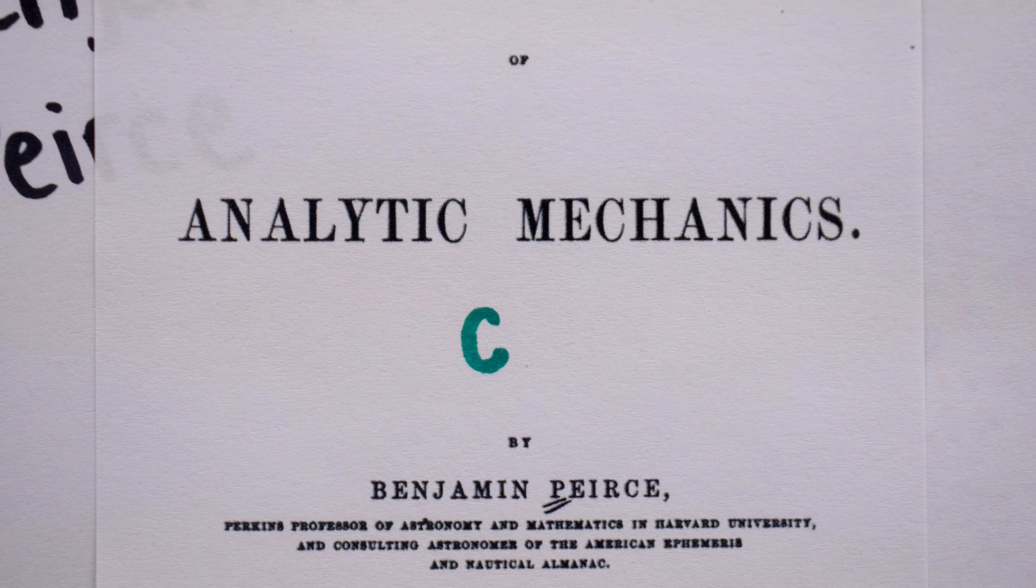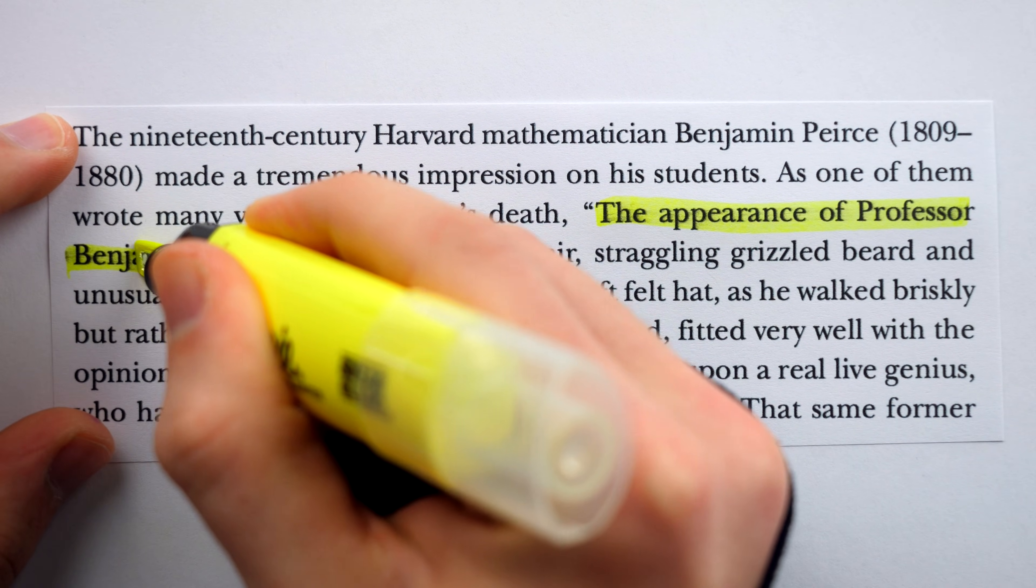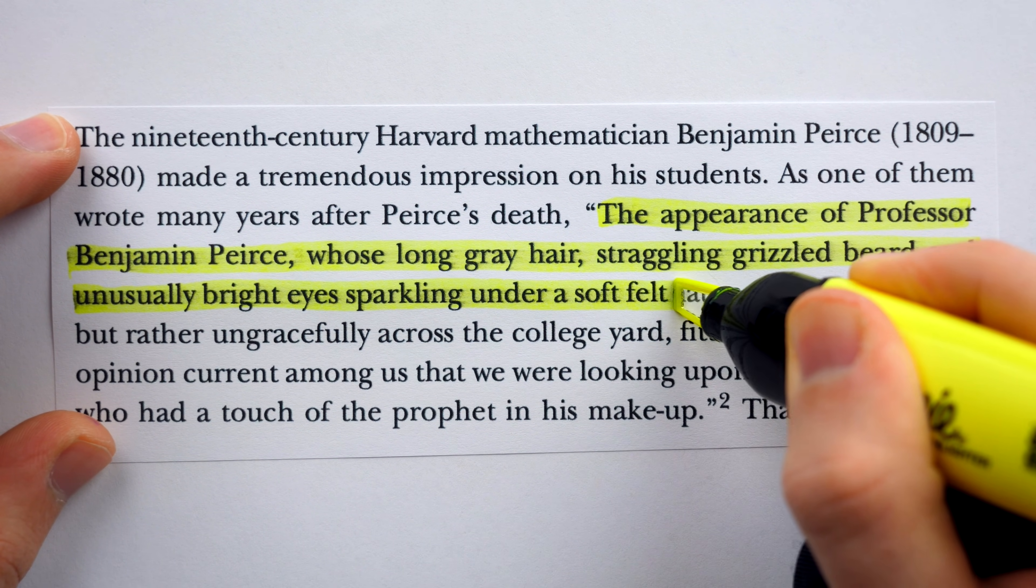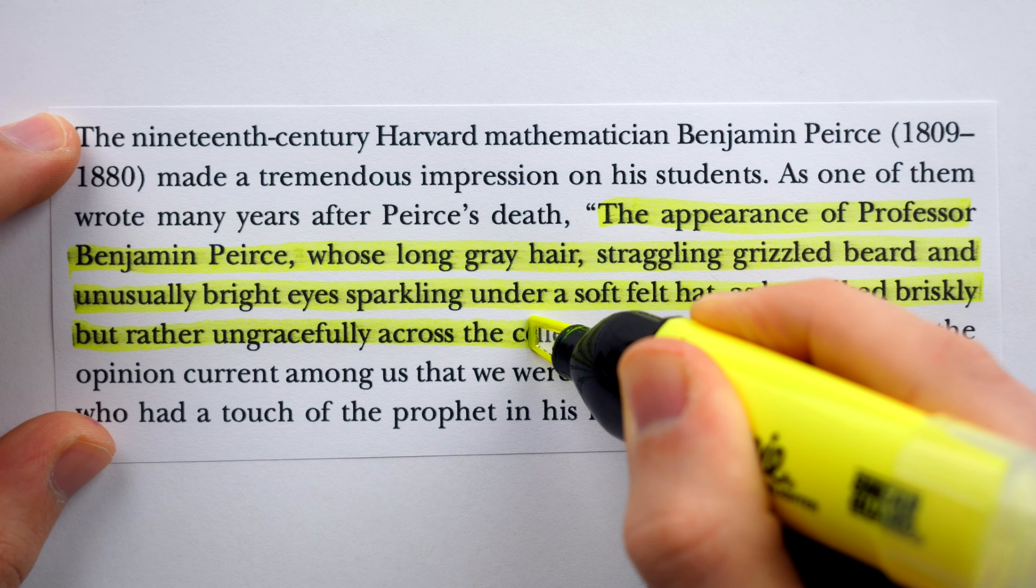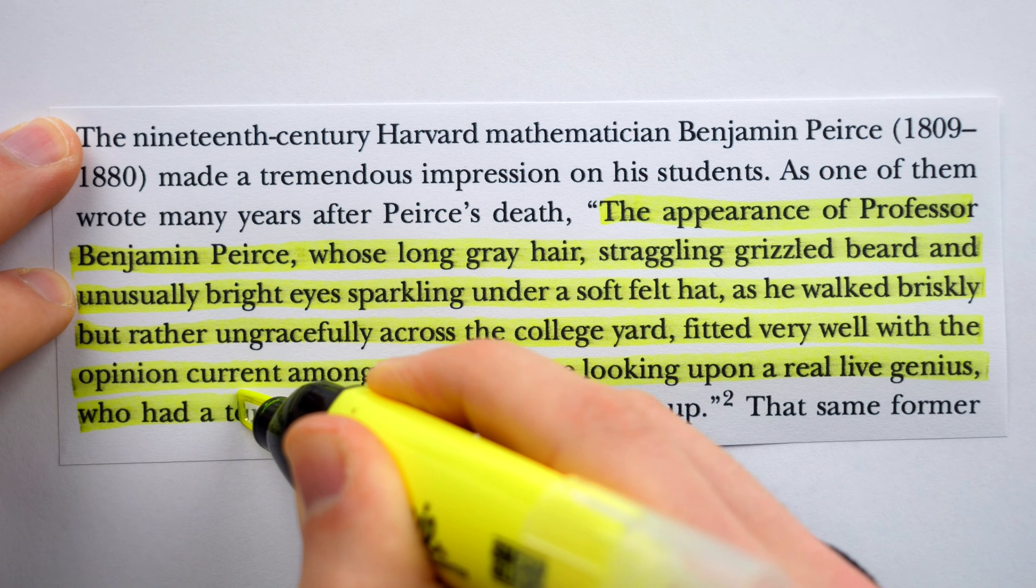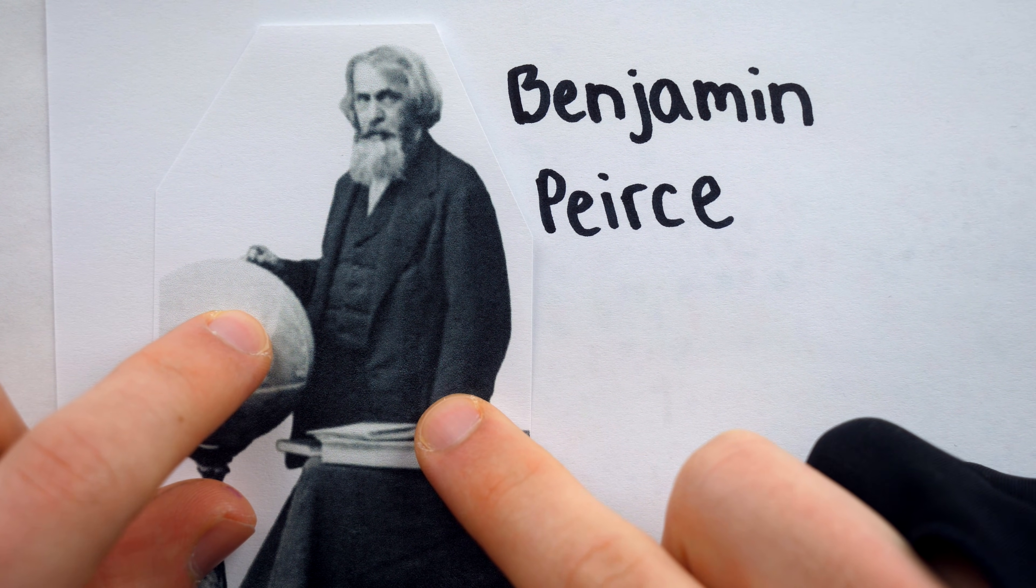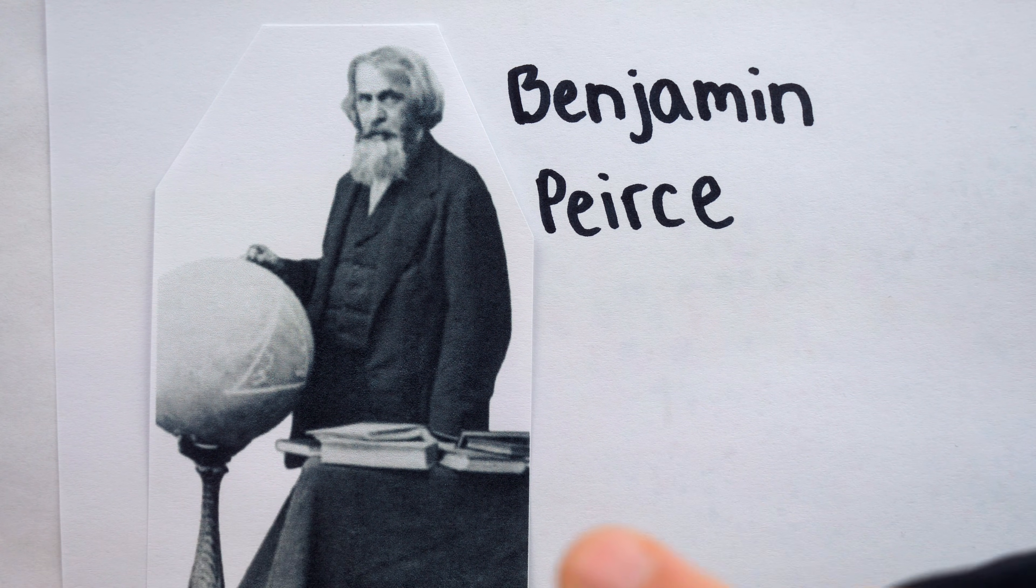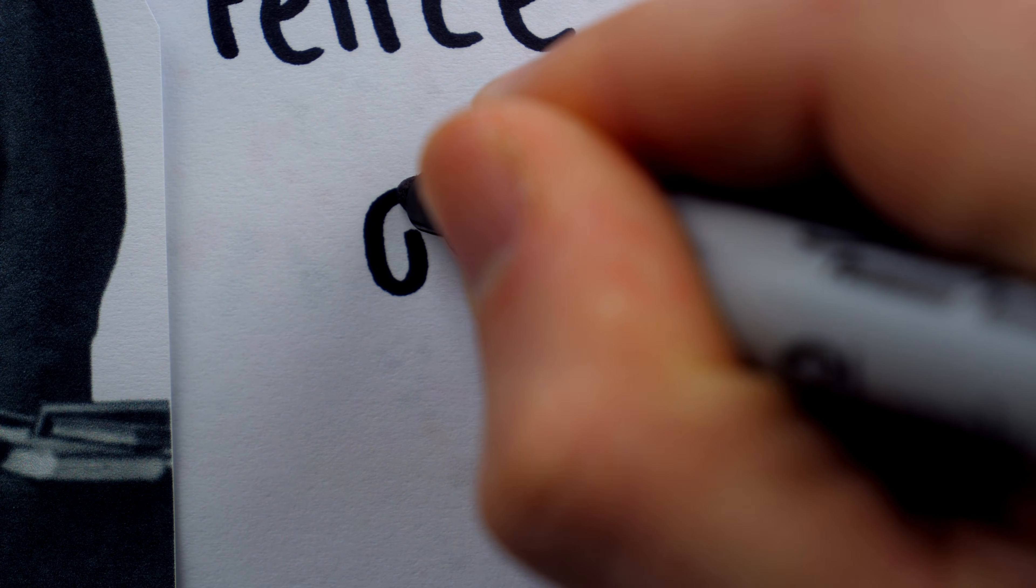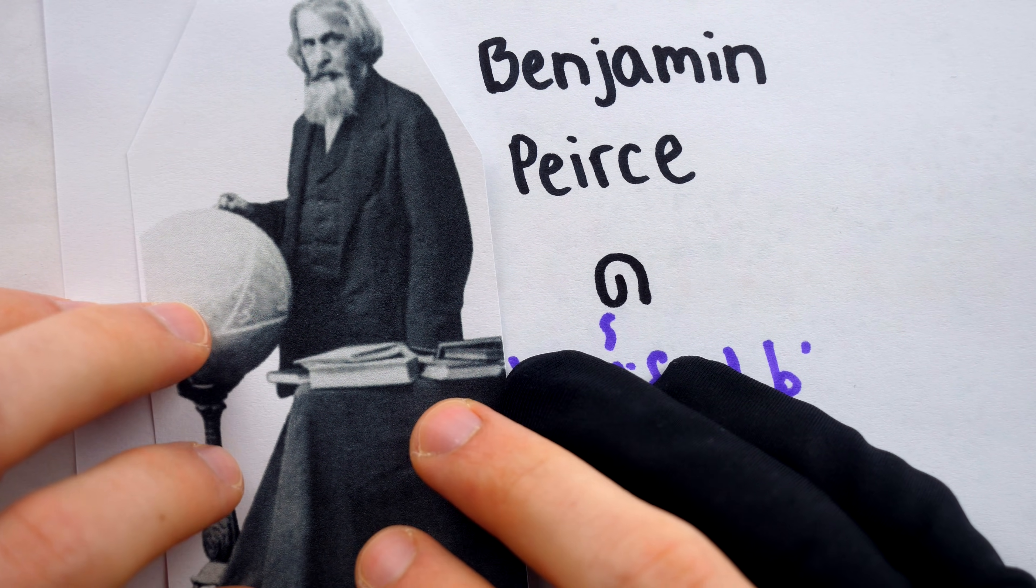Before I show you this notation, let me read you a quote from one of Pierce's former students, so you can get a sense of the sort of fella we're dealing with. The appearance of Professor Benjamin Pierce, whose long gray hair, straggling grizzled beard, and unusually bright eyes sparkling under a soft felt hat, as he walked briskly but rather ungracefully across the college yard, fitted very well with the opinion current among us that we were looking upon a real, live genius, who had a touch of the prophet in his makeup. For a figure whose outward appearance and aura were so striking to those who knew him, it's no surprise his inner contemplations birthed a most peculiar symbol for the base of the natural logarithm. As it was the base of the natural logarithm, or Napereon logarithm as he called it, he liked to use this character for E, which he called a modified B. And he says he used this symbol with success in his lectures.